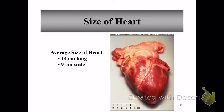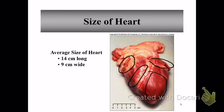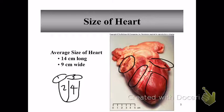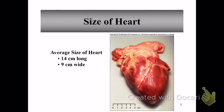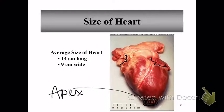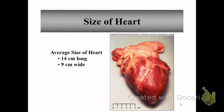The heart is on average 14 centimeters long and 9 centimeters wide. The heart has four chambers — two small ones at the top and two big ones at the bottom. Those little flappy things on the outside are called auricles, and the pointy bottom is called the apex of the heart. The top two chambers are the atria, and the bottom two are the ventricles.